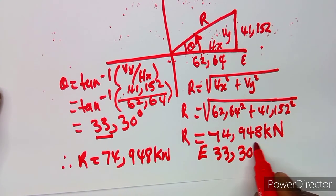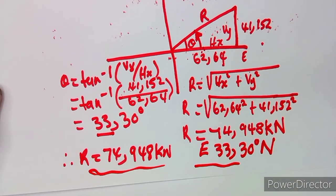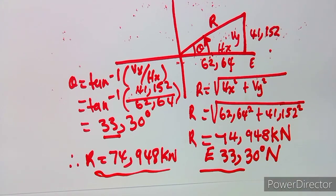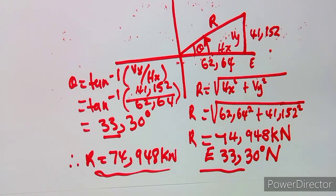Therefore, the resultant is 74.948 kilonewtons at East 33.30 degrees to the North — and that is the force that will keep these forces in equilibrium. Note that examiners can ask this same question in stages: calculate horizontal component, vertical component, and direction separately, then the resultant. Or they can ask it all at once. So revise past question papers so you understand how the question is asked. From Mason African Motifs, till we meet again — thank you.